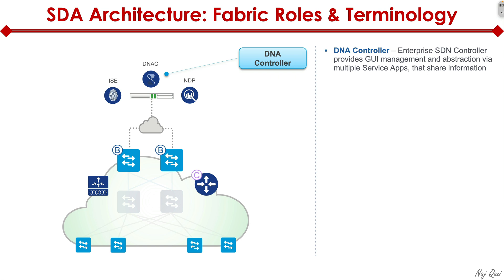The DNAC controller also supports northbound APIs like REST API. So if you're using tools like Ansible, Chef, Puppet, or any other automation tool, you can program your network — spinning up switches, wireless LAN controllers, or APs — all automated. Instead of touching each device hop by hop, we use a centralized model for configuring the entire network.